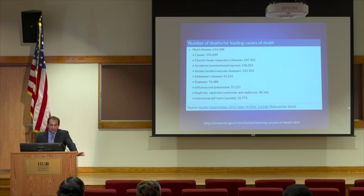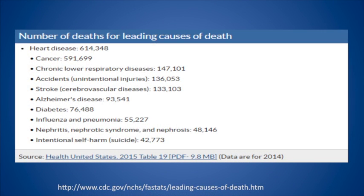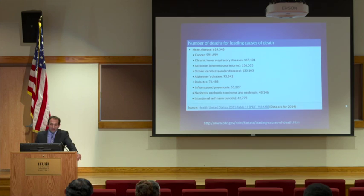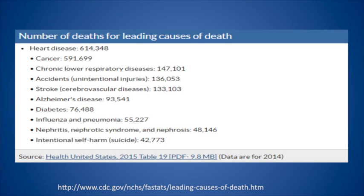Looking at the leading causes of death from the CDC — this is from 2014 — heart disease remains the leading cause of death in the United States, with about 614,000 deaths per year. Cancer is basically creeping up; if you look at the curves they're kind of merging, and I think in the future cancer may surpass cardiac conditions. But as of right now, it's still heart disease that kills most people in the U.S.